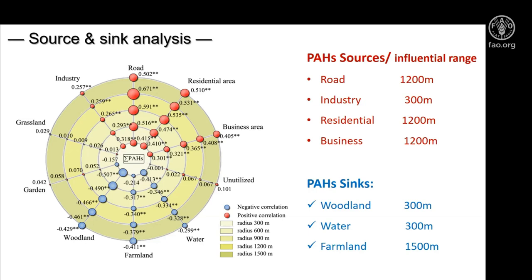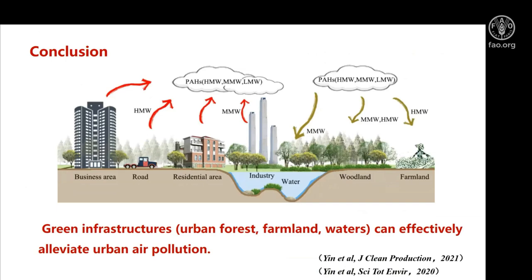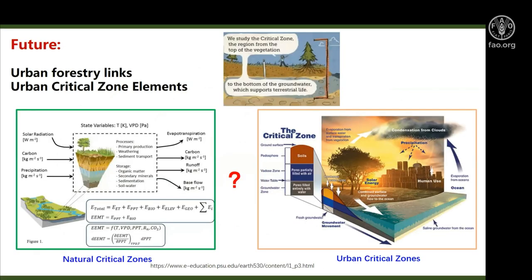They seem to be very effective ways to improve air quality. To conclude, green infrastructures — including urban forest, farmland, and water — can effectively mitigate urban air pollution. We have to balance land use types, using more green infrastructures to make the city cleaner. For future research, I think the critical zone research is very relevant here, and urban forestry links all the urban critical zone elements — we should look very carefully at this in the future.